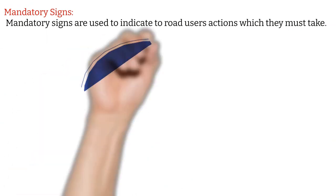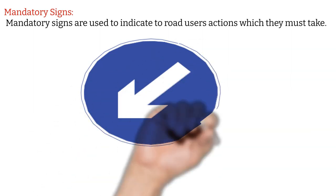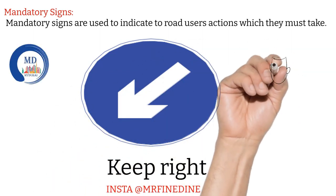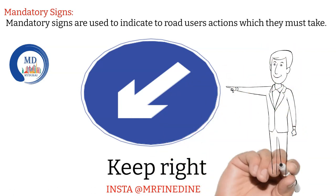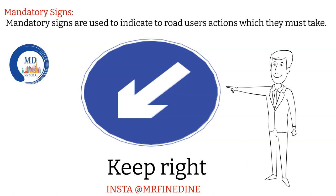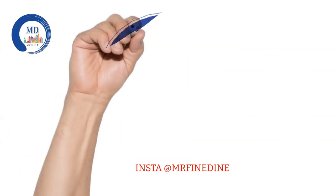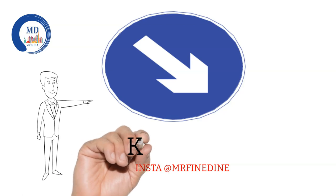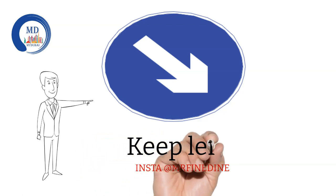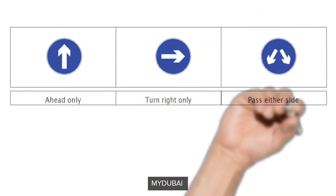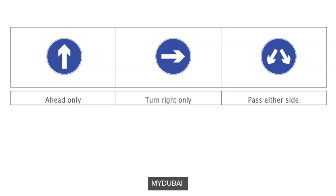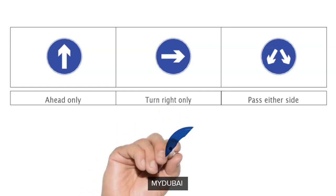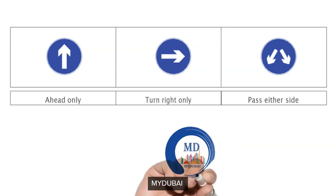The next category is mandatory signs. Mandatory signs are used to indicate to the road user an action which they must take — in other words, you don't have any second option, you have to do it. This sign means you need to turn right, whereas this sign means you need to turn left. The blue background with white direction arrows gives you directions you have to follow — there are no other options. The first sign means ahead only, the second is turn right only, and the last one is pass either way — either you can take right or left.